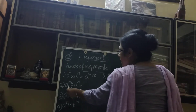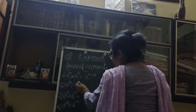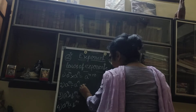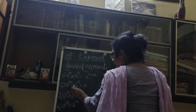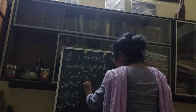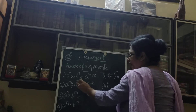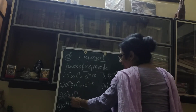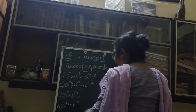Now here you see: a to the power m divided by a to the power n. That time again our bases are the same, both are a. So we will do m minus n — we will subtract the exponents.